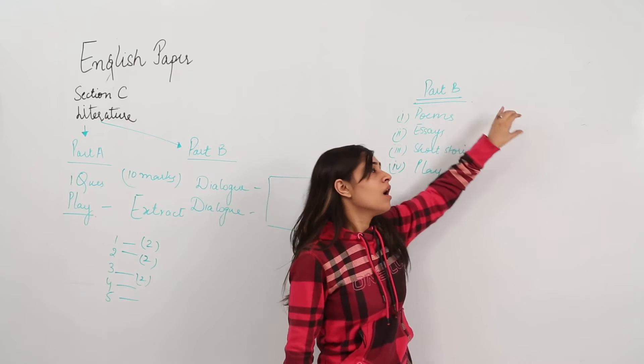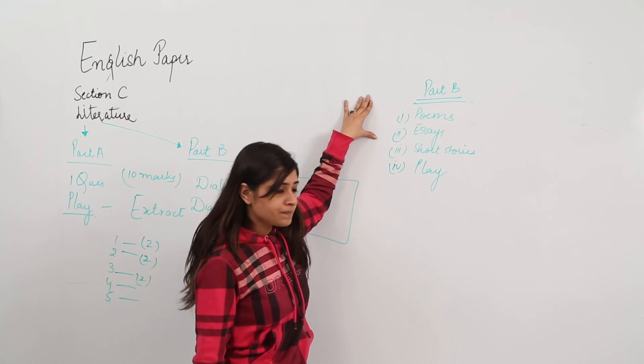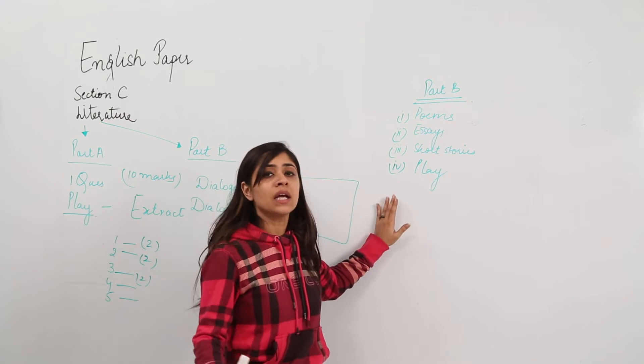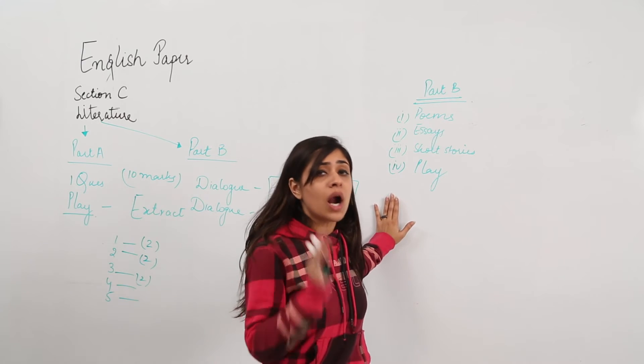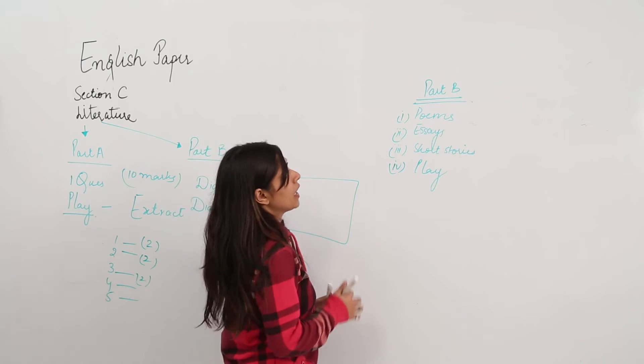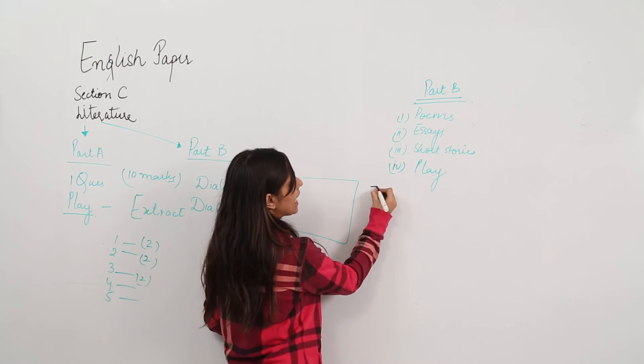In part B, try and attempt a question from a poem, then from the essay, then from the short stories, and then in the end, if you do not know anything and you are not left with any options, then follow up the play. Here in part B, you will have essay type questions.